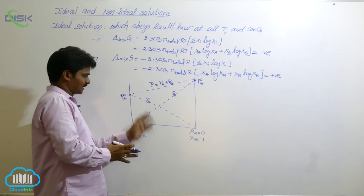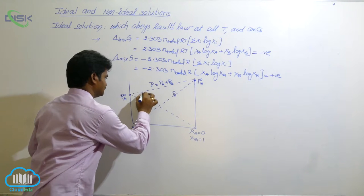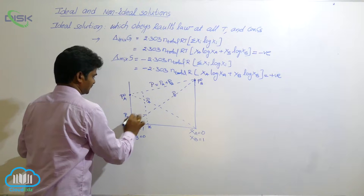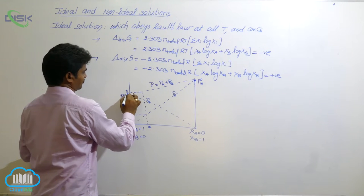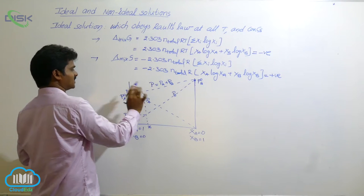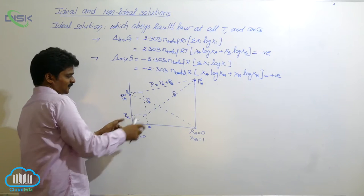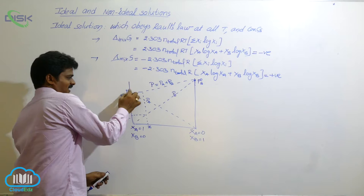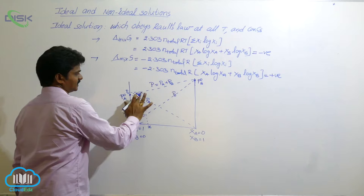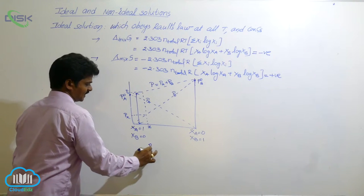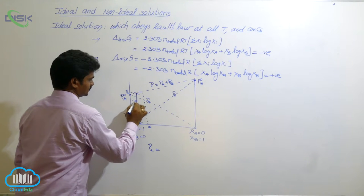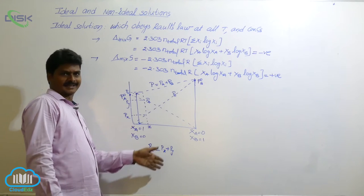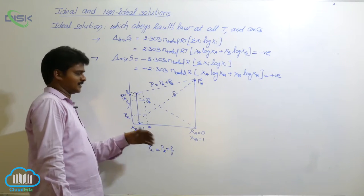At any point in the composition, say some point Z here — at this point Z, the total pressure is the sum of the partial pressure of A and partial pressure of B at that composition. We can sum up the partial pressures of A and B to get the total pressure at any point in the curve.